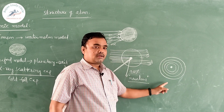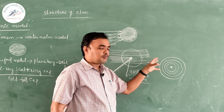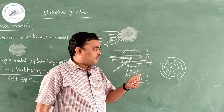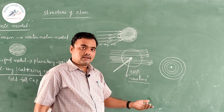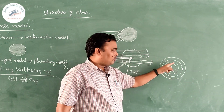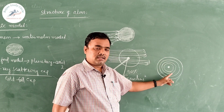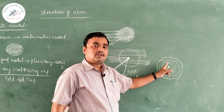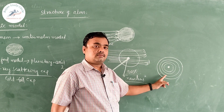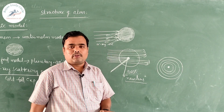Whenever you observe a particle circulating in circular paths, it should lose energy continuously and finally collapse or fall into the center. In the same way, the electron revolving circularly around the nucleus should continuously lose energy and finally fall into the nucleus — the atom should collapse. But atom is stable, and this stability of the atom could not be explained by Rutherford. This is the main drawback.